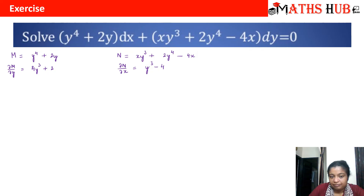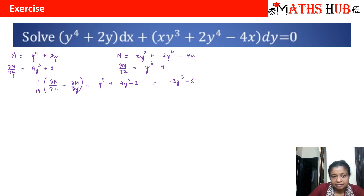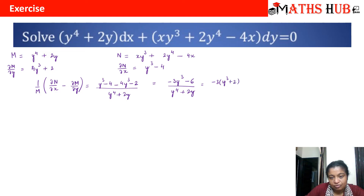Out of M and N, division is possible with M. Let's take the difference ∂N/∂x − ∂M/∂y: that gives (y³ − 4) − (4y³ + 2) = −3y³ − 6. Dividing by M = y⁴ + 2y: taking −3 common from the numerator gives −3(y³ + 2), and factoring y from the denominator gives y(y³ + 2). The (y³ + 2) cancels, leaving −3/y.